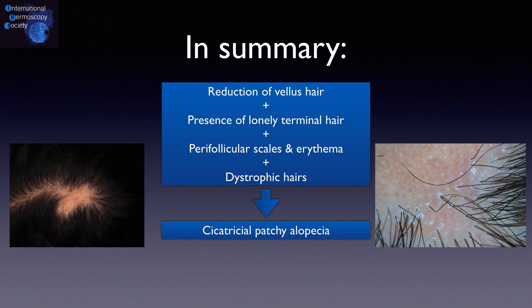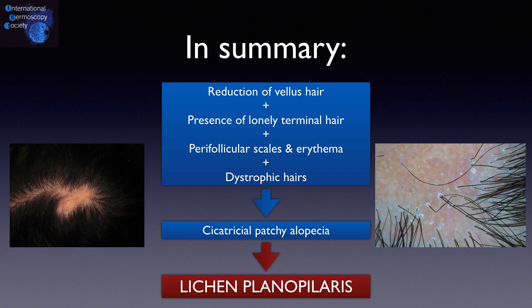In summary, a patch alopecia with decreased vellus hairs, presence of a lonely hair in the center, intense perifollicular scales and erythema with many dystrophic hairs on otherwise normal scalp skin is suggestive of lichen planopilaris.